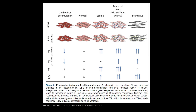Here are certain examples showing what happens to T1 mapping, T2 mapping, and ECV in various cases. In normal tissue, everything is normal. When there is lipid or iron deposition, T1 will be low and T2 and ECV will be normal. When there is edema, T2 is high, T1 is high, and ECV is slightly raised — as in acute MI. In scar tissue or fibrosis, there is a slightly raised T1, a relatively very high ECV, and normal T2 since there is no edema.